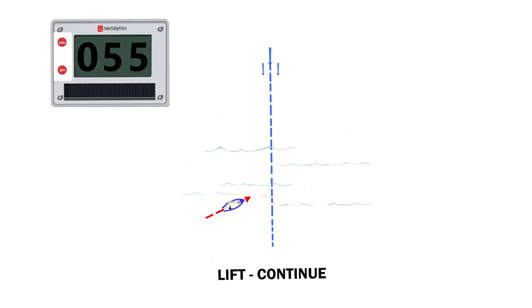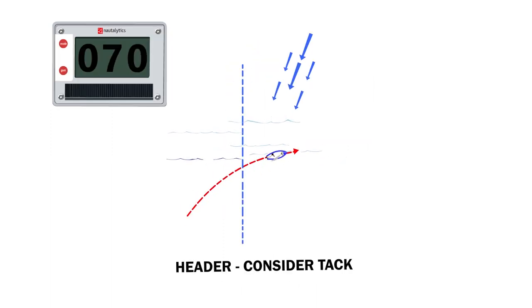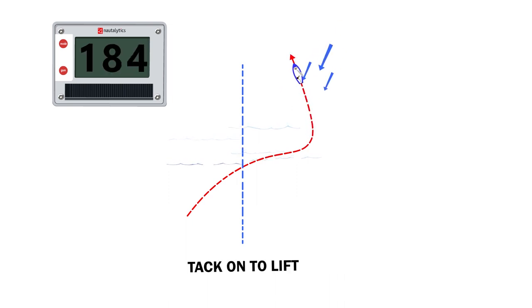If we are sailing a compass heading above the median number, a lift, we carry on the same tack. If we are sailing a compass heading below the median number, a header, we consider a tack onto the opposite tack.